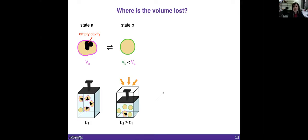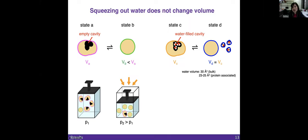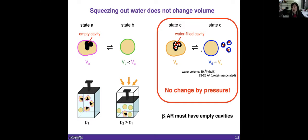The question that follows is where is the volume lost. We can imagine a first situation where we have a protein with an empty cavity. We apply pressure and it goes to a state with smaller volume. But we can also think about a second situation with a water-filled pocket, and you apply pressure and the waters are squeezed out. But in this case, we don't have a net volume reduction. For us, this means that the beta-1 must have empty cavities inside its structure.